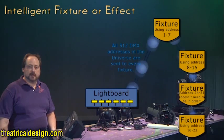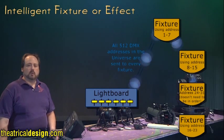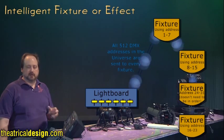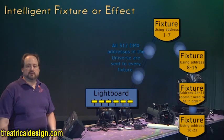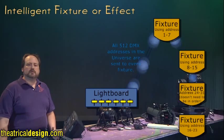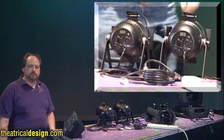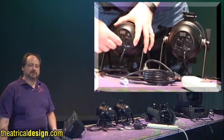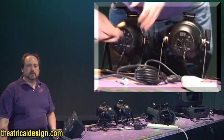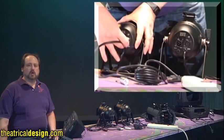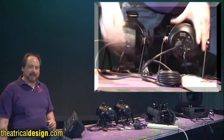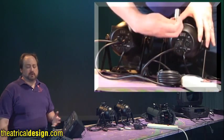Units are set up in a daisy chain fashion, where the signal is passed from the controller to each device in a single line. Up to 32 devices may be connected in a daisy chain. DMX units have a signal input jack and output jack to aid in this information pass-along. The last device in the chain should make use of a terminator, which absorbs leftover signal power so that it's not reflected back into the cable, which would degrade the data.